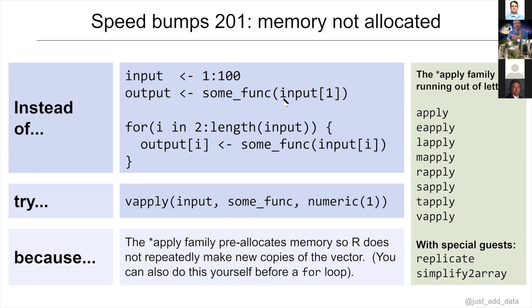I'm forcing this kind of subset to say: okay, now I want the second element of my output to be the application of some function on the second element of my input — and I'm just growing the vector one element at a time. That's the bad approach we're trying to illustrate.